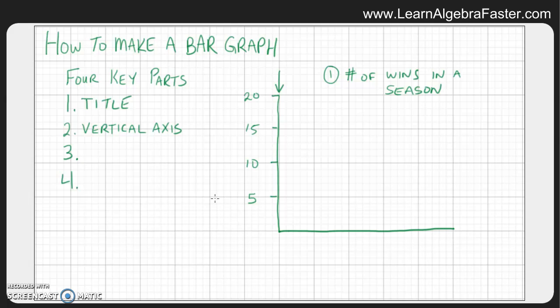But this could easily be 1,000, 2,000, 3,000, or 4,000. It literally could be anything. So just keep that in mind. That's one good thing about bar graphs—they're not only used for small numbers, they can be used for large numbers too. We will label this area as key part number two.